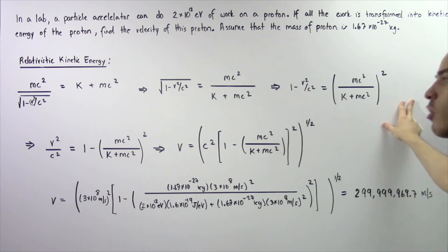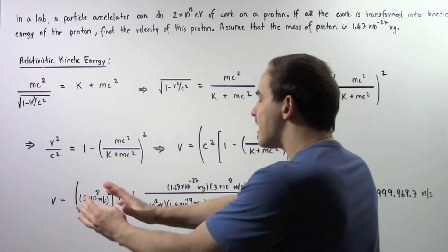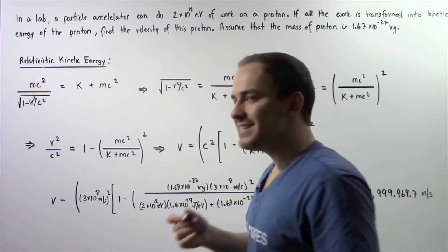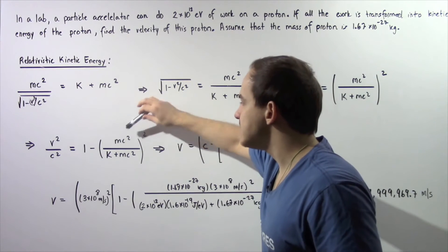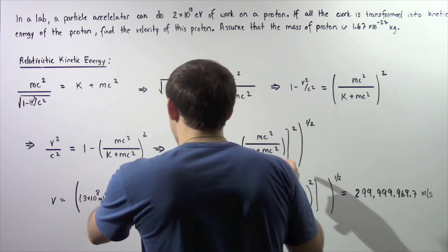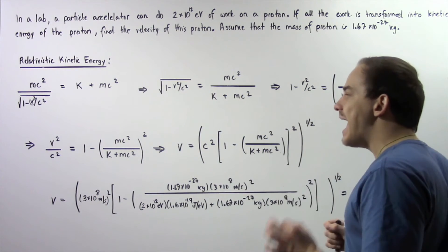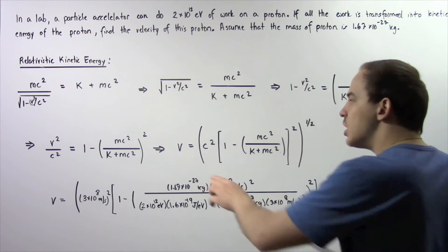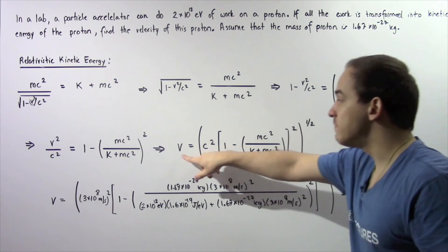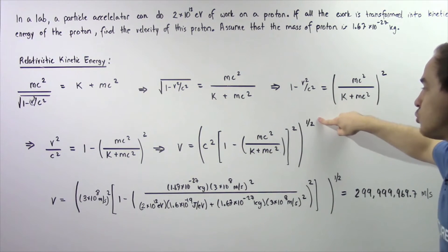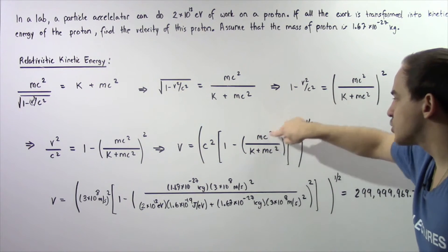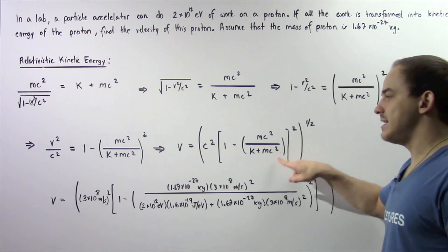Remember, we're solving for the velocity — we want to bring the velocity to one side and everything else to the other side. We multiply both sides by negative 1, then add 1 to each side so that v squared divided by c squared is equal to 1 minus the square of mc squared divided by k plus mc squared. Finally, we multiply both sides by c squared and take the square root of both sides, giving us the velocity of our proton equal to the square root of c squared multiplied by 1 minus the square of mc squared divided by k plus mc squared.